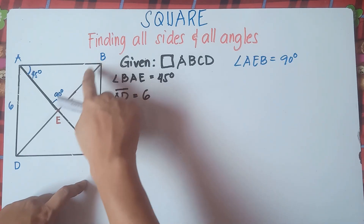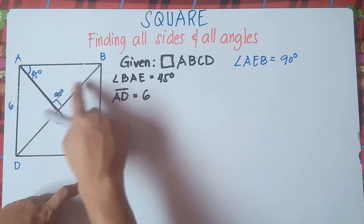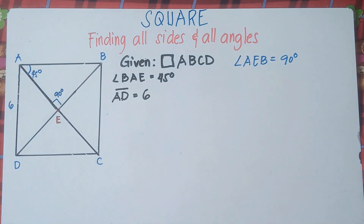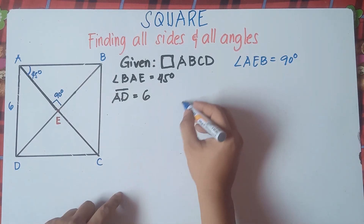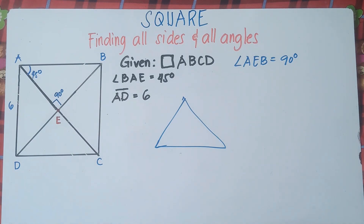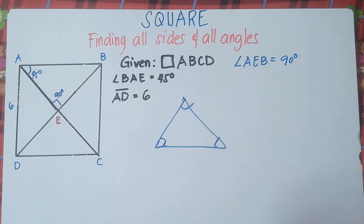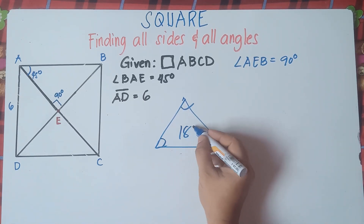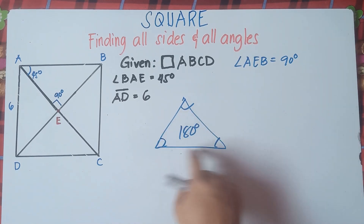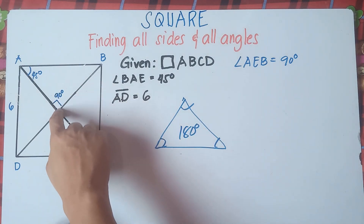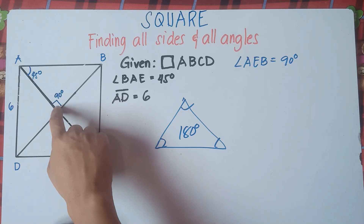Now to get this angle B, let's talk about the triangles, class. Do not forget that the sum of any kinds of triangles — whether equilateral triangle, isosceles triangle, or any kinds of triangle — the sum of interior angles must equal 180 degrees. Since we have a 90 degrees here at angle AEB, this is a right triangle because there's one angle that measures 90 degrees.